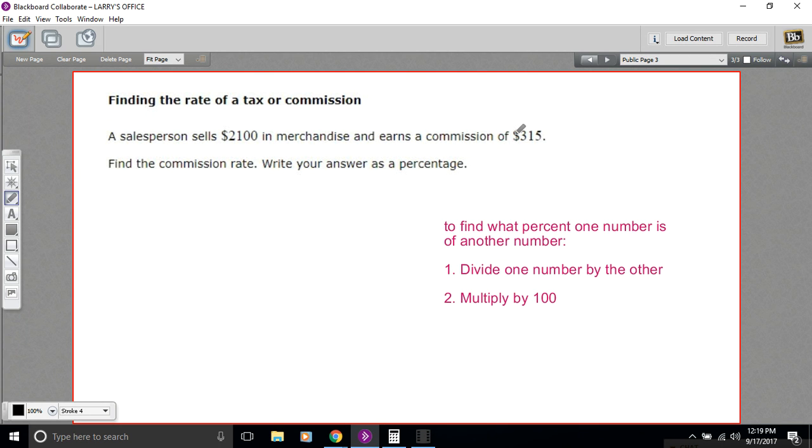These commissions usually are calculated based on a percent of the total sales. So really we're being asked to find what percent of 2,100 is 315. When you want to find what percent one number is of another number, you divide one number by the other and then multiply by 100.